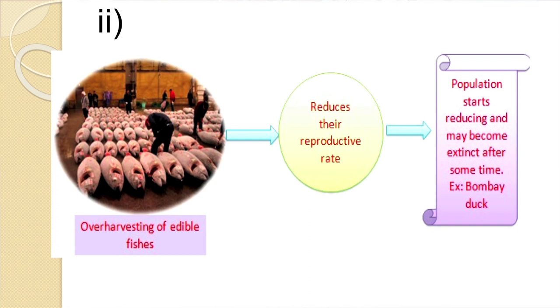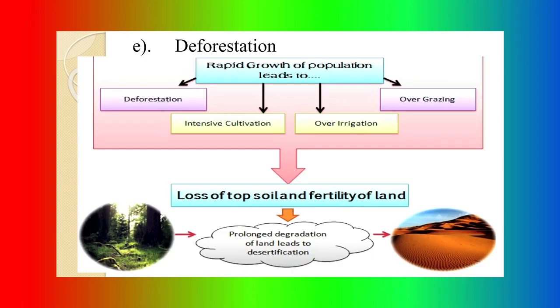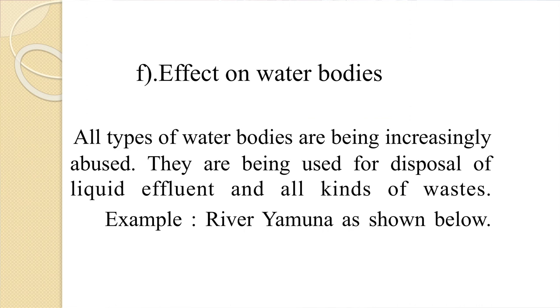One recent example of such extinction is the Bombay duck fish. The next ill effect is deforestation. Rapid growth of population leads to deforestation, intense cultivation, over-irrigation and over-grazing. Because we have more cattle and more humans to feed, land comes from the forest. This leads to loss of topsoil and fertile land. When natural ecosystems undergo prolonged degradation of lands, it leads to desertification. The right diagram shows desert formation.